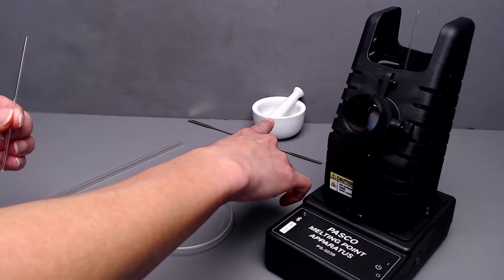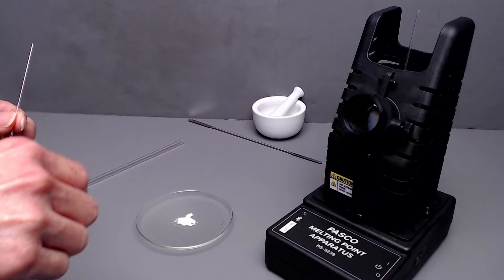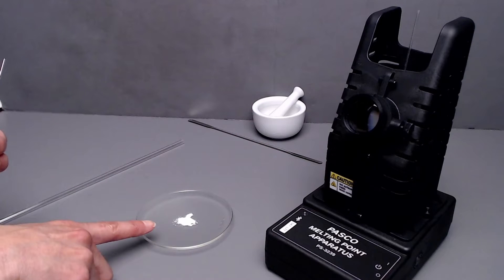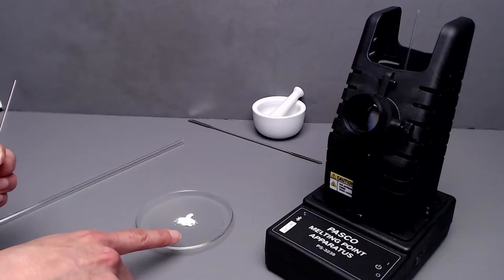First take your sample and grind it to a fine powder with a mortar and pestle. Then transfer the fine powder to either a watch glass or a filter paper.